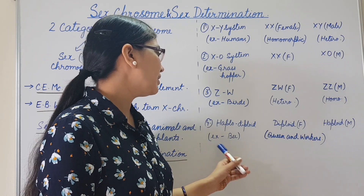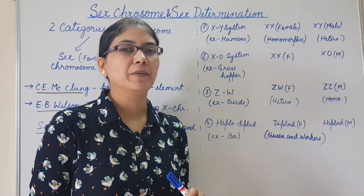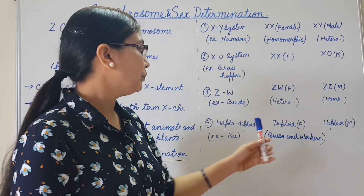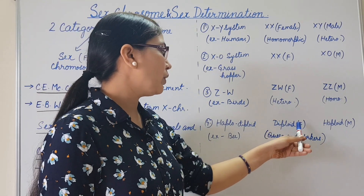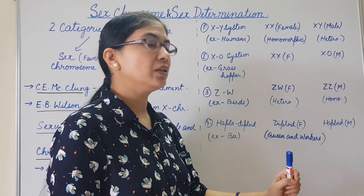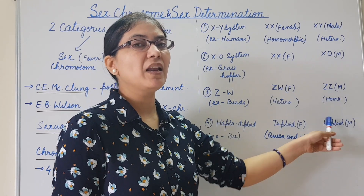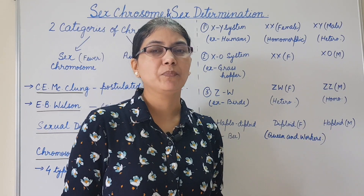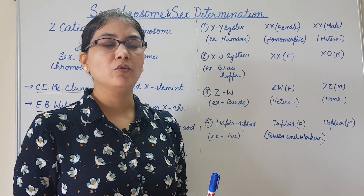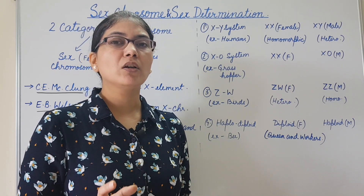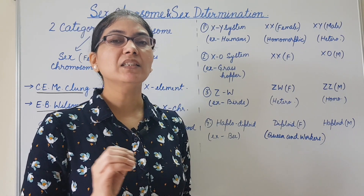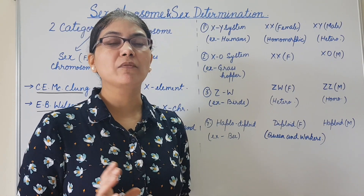The fourth is the haplodiploid system, example: bees. Here, females are diploid — both the queen and workers — and males are haploid. So here, sex chromosomes are not involved in the determination of sex.